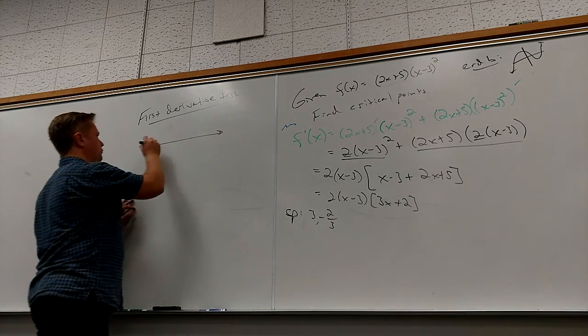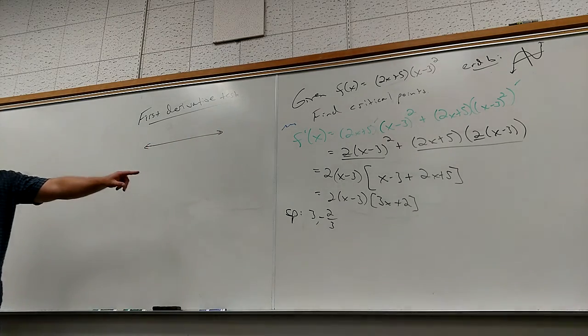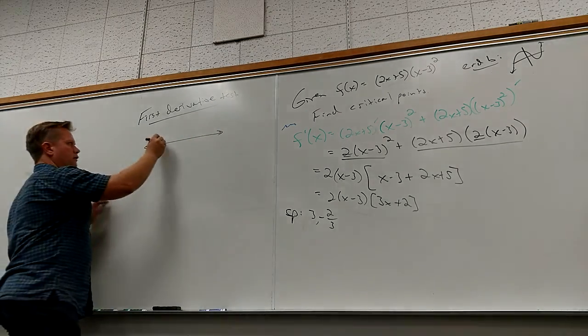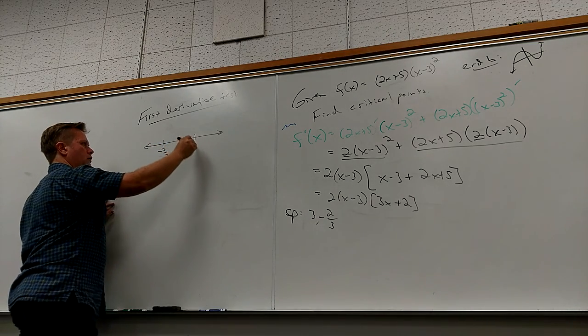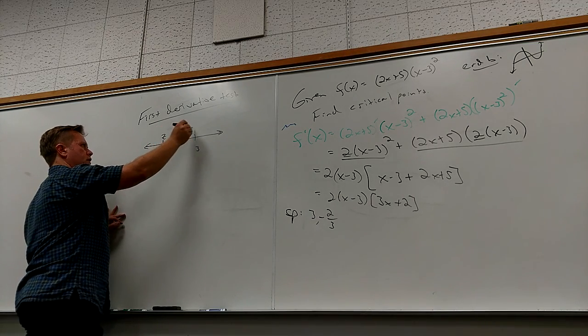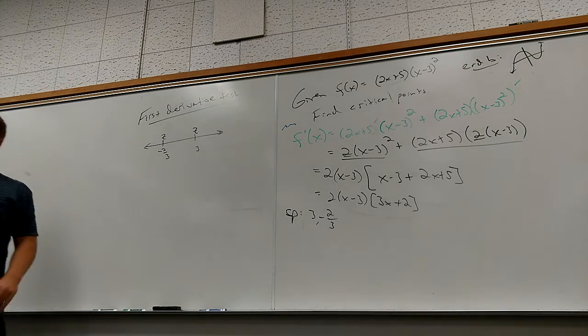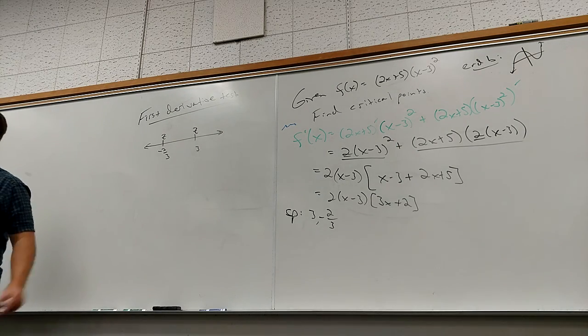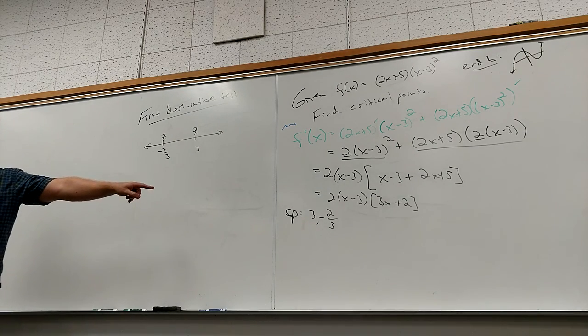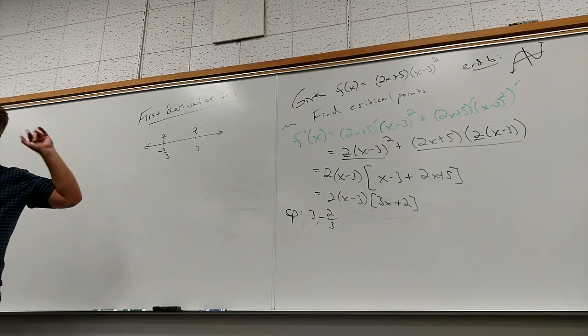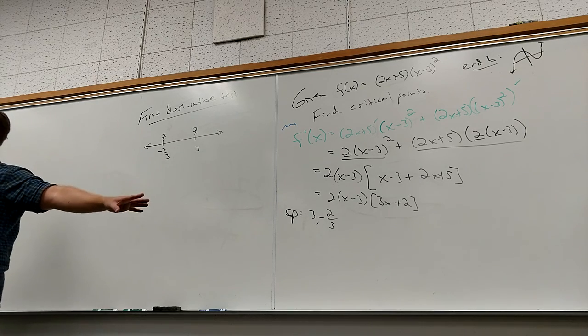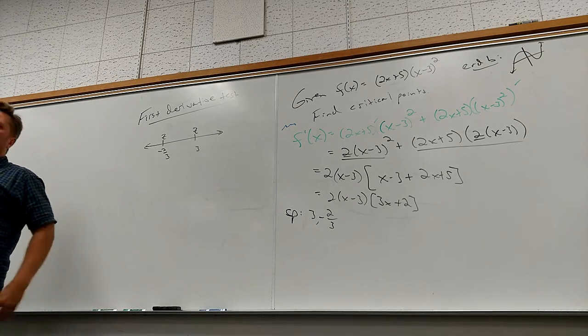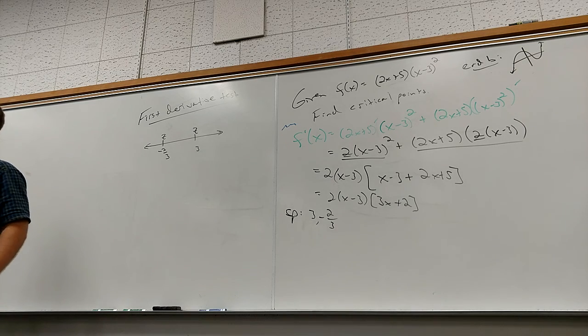So here's my first derivative outputs. Let's see. I'm going to put down negative two-thirds and three. I'm going to put a z on top of them. What does that z signify? That the first derivative is zero at those points.